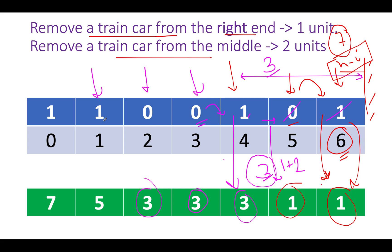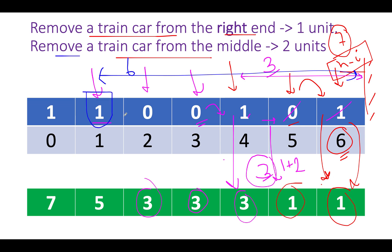Next we see a 1. First option: n minus i = 7 minus 1 = 6. Middle removal: right value is 3, so 3+2 = 5. Minimum of 6 and 5 is 5, so 5 gets set here.